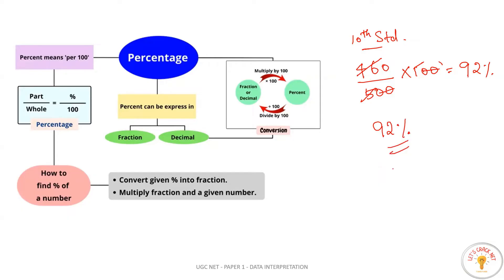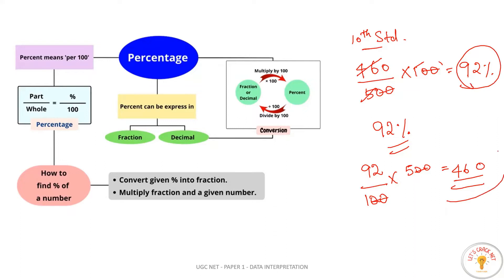Sometimes if we have a percentage like 92%, to convert back to the decimal value we do: 92 divided by 100 into 500, which gives back the original value of 460. This is the formula — the corresponding decimal formula. If we cancel the percentage, we divide the percentage by 100 into the total score to identify the actual value.